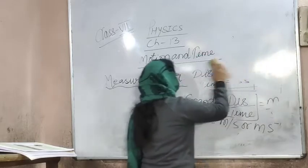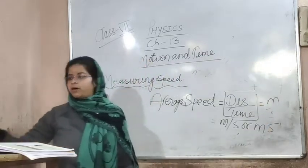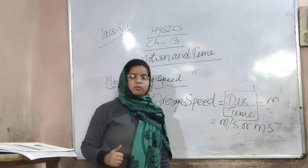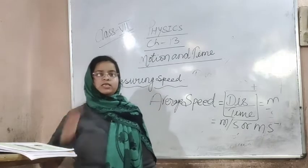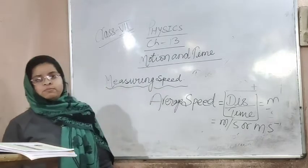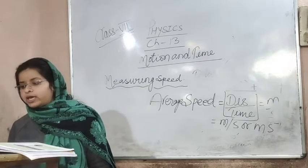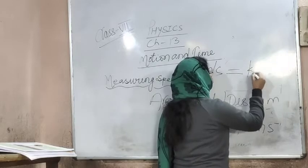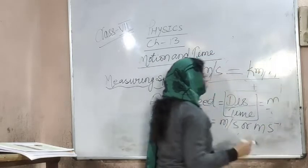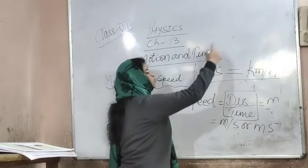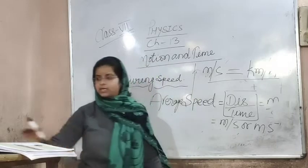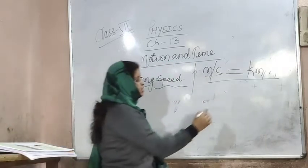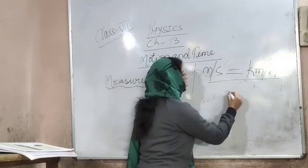If you have been given a question in meter per second, and you need to find kilometer per hour, or vice versa — how do we convert? When we are given meter per second and need to convert to kilometer per hour, we need to change the unit. The easiest way is: to convert from km/h to m/s, divide by 18 and multiply by 5.